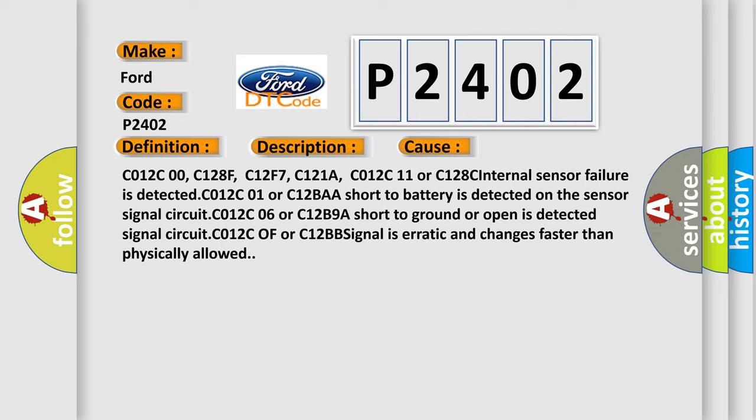C012C00, C128F, C12F7, C121A, C012C11 or C128C internal sensor failure is detected. C012C01 or C12BAA short to battery is detected on the sensor signal circuit. C012C06 or C12B9A short to ground or open is detected. Signal circuit C012C OF or C12BB signal is erratic and changes faster than physically allowed.